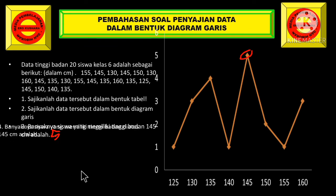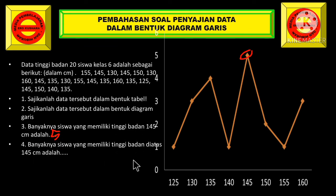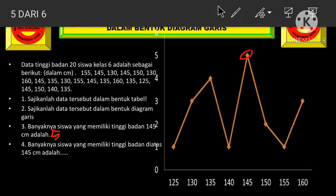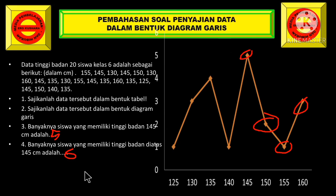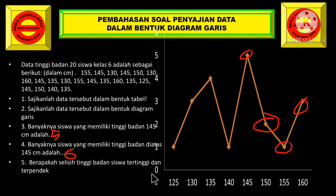Pertanyaan yang selanjutnya, nomor 4, adalah banyaknya siswa yang memiliki tinggi badan di atas 145 cm. Berarti yang memiliki tinggi badan di atas 145 cm adalah 2 siswa ditambah 1 siswa ditambah 3 siswa. 2 ditambah 1 sama dengan 3, ditambah 3 sama dengan 6 siswa.